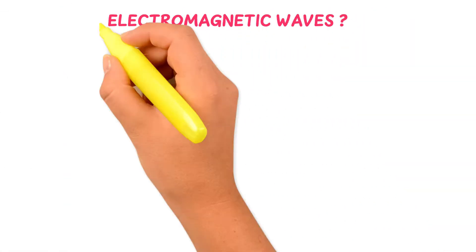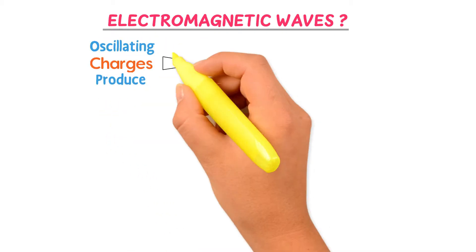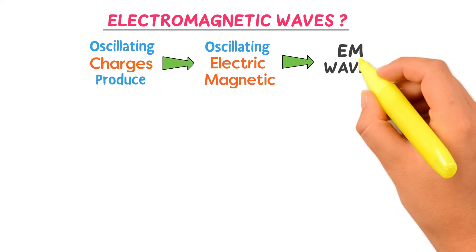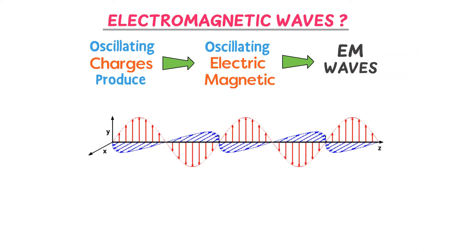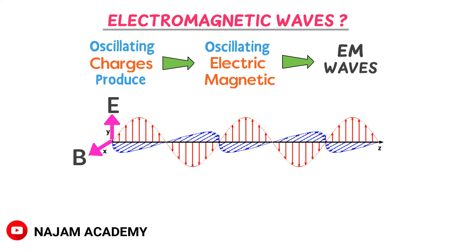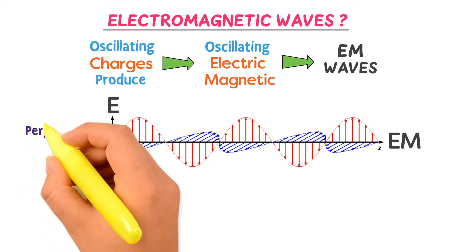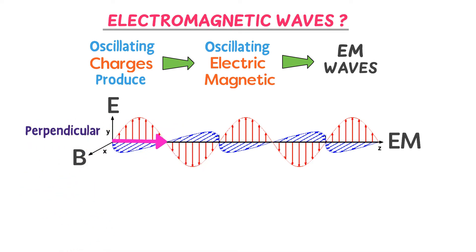Now, what are electromagnetic waves? Oscillating charges produce oscillating magnetic fields and electric fields, and as a result electromagnetic waves are produced. For example, consider this wave motion: the electric field E oscillates in the y direction while the magnetic field B oscillates in the x direction. As a result of this perpendicular oscillation of electric and magnetic fields, electromagnetic waves are produced in the z direction. The oscillation of the electric field and magnetic field are perpendicular, or at 90 degrees, while the wave motion along the z direction is also perpendicular to both electric and magnetic fields.